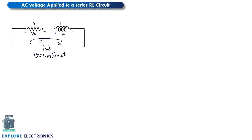In the previous video we saw that when applying an AC voltage to a pure resistor, the current and voltage are in phase. The voltage and current phases are on the same axis, and we can say the phase shift between these two will be zero degrees.